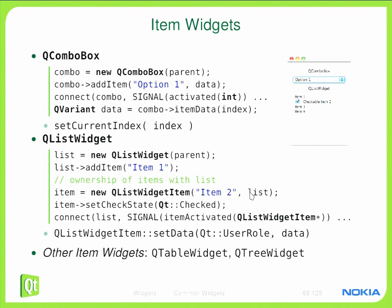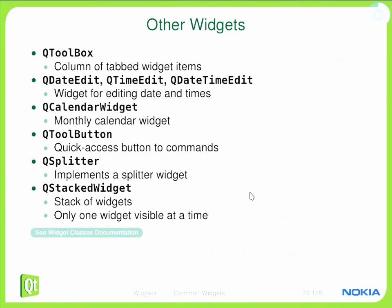There are other more complex item widgets like QTableWidget and QTreeWidget, which you can read about in the Qt documentation. And there are even more widgets: QToolBox has a column of tab widget items; there are date and time widgets like QDateEdit, QTimeEdit, and QDateTimeEdit for editing dates and times; and QCalendarWidget provides a full monthly calendar for choosing a specific day. There's also QToolButton for quick access to commands, QSplitter, and QStackedWidget, which holds a stack of widgets with only one visible at a time.